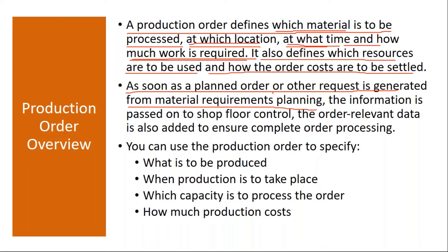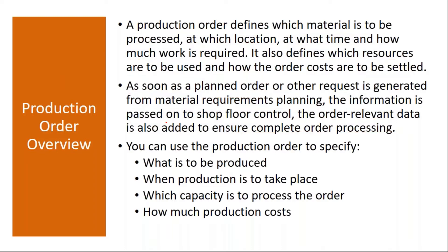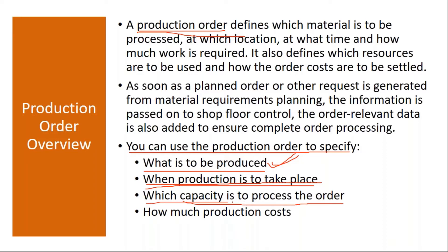A production order also defines which resources are to be used and how the order costs are to be settled — it contains cost information as well. As soon as a planned order or other request is generated from MRP (Material Requirement Planning), if there is no sufficient stock, the system will generate a planned order. This information is passed on to the shop floor control, and the order-relevant data is added to ensure complete order processing. The production order is mandatory to start production.